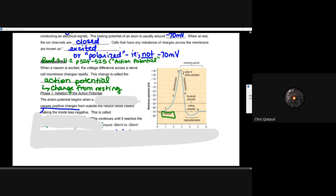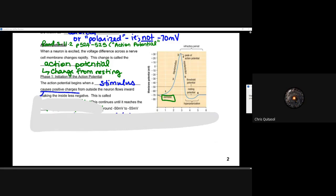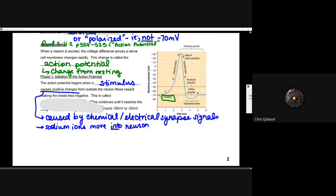This action potential begins with a stimulus. That stimulus will cause positive charges from outside the neuron to flow inward, making that inside of the cell less negative. It's caused by chemical or electrochemical electrical synapse signals — either a neurotransmitter or direct contact. It's going to stimulate that ion channel to open up and allow more positive ions to flow into the cell.